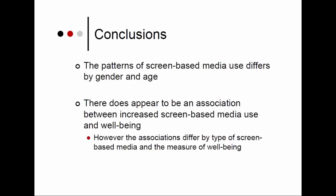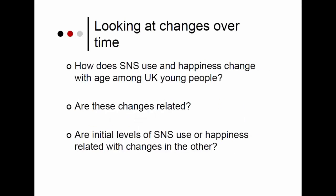From this research we concluded that there were different patterns of screen media use by both gender and age, and there was an association between screen-based media use and wellbeing. However, these associations differed by type of screen-based media use and the measure of wellbeing. We wanted to look at this further and examine changes over time, since the analysis I showed was from Wave 1 — just a snapshot. Now that we have five waves of data, we wanted to look at whether social networking use and happiness change with age among UK young people, and whether these changes are related.